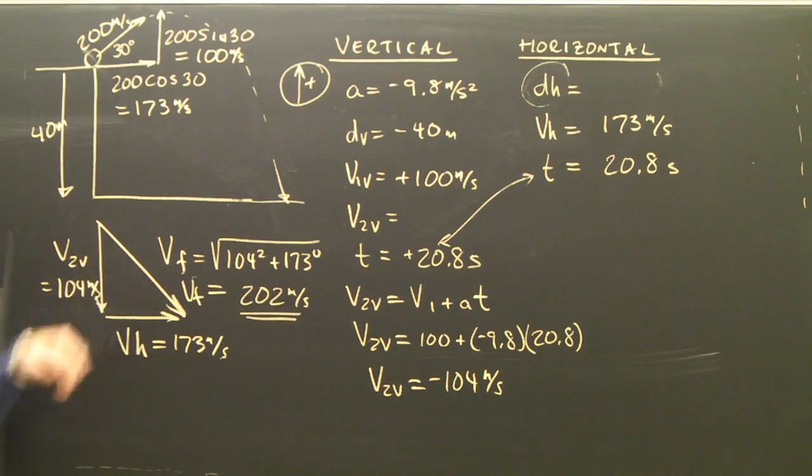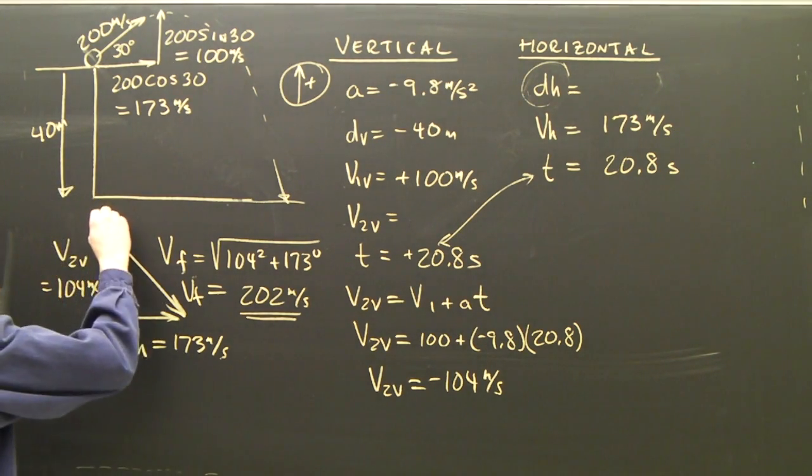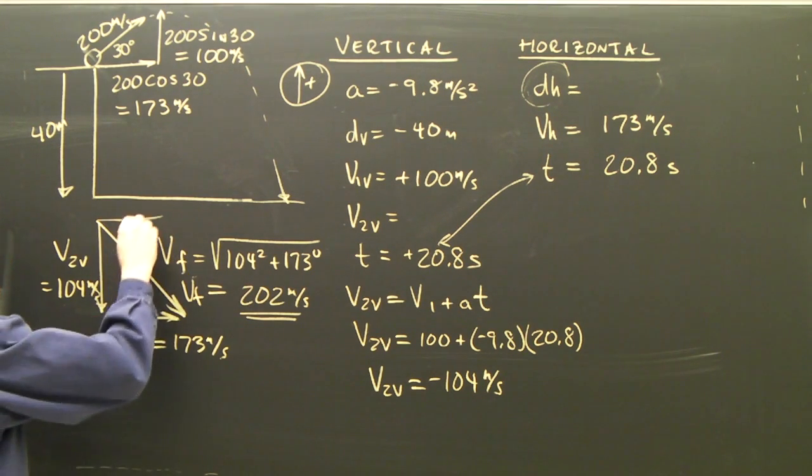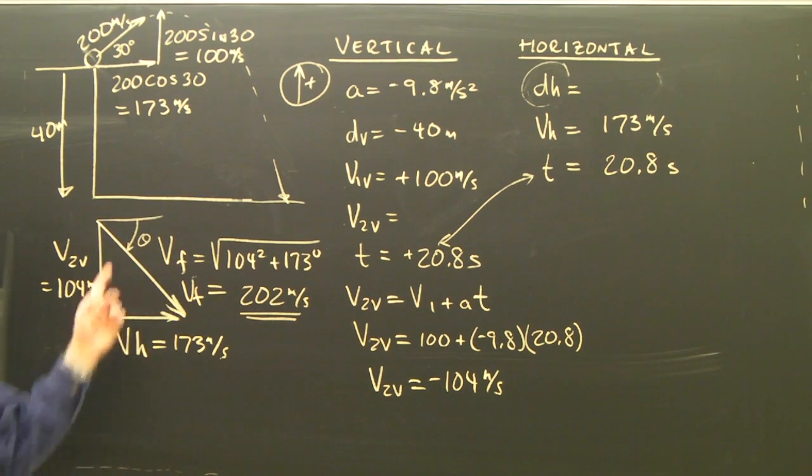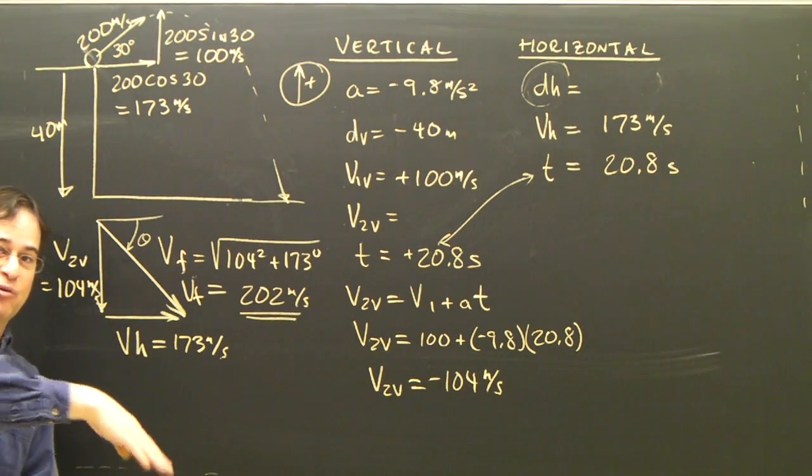I now know that it impacts the ground at 202 meters per second. Now what I need to know is what angle does it hit the ground at? The angle I'm really interested in is this angle here. Because this angle will let me say that it hit the ground at so many degrees below the horizon.